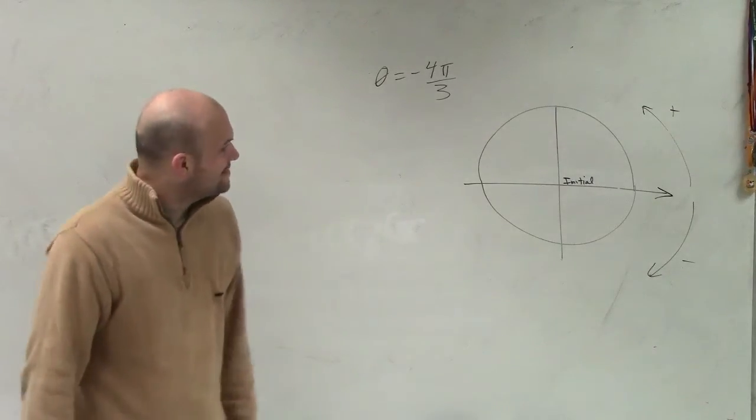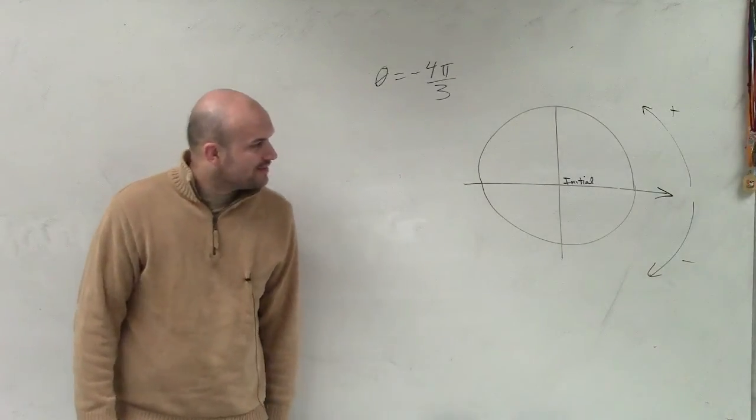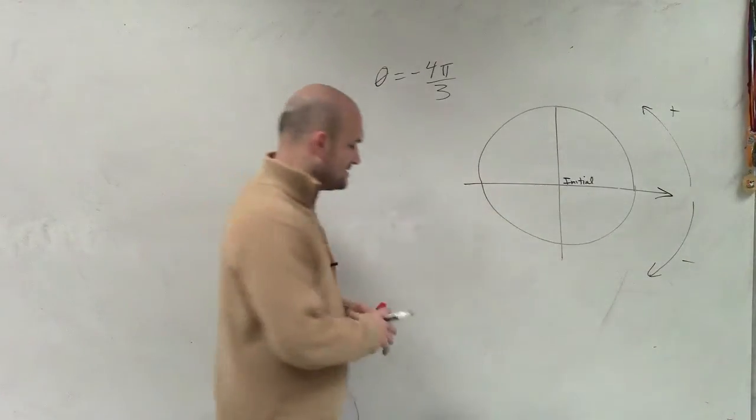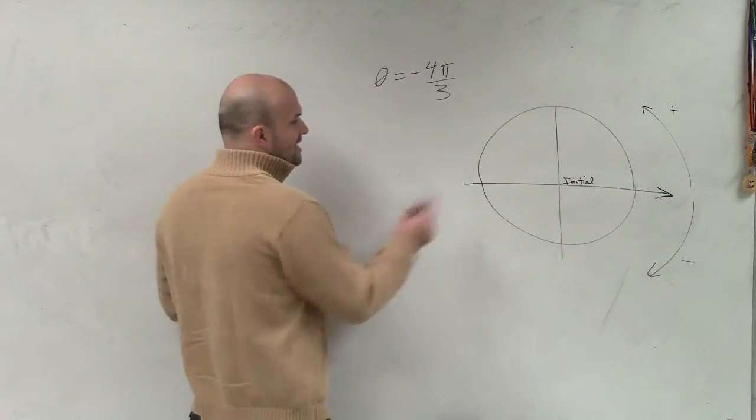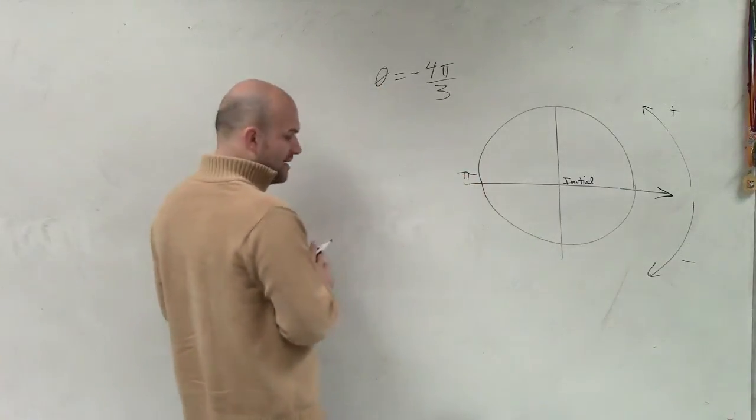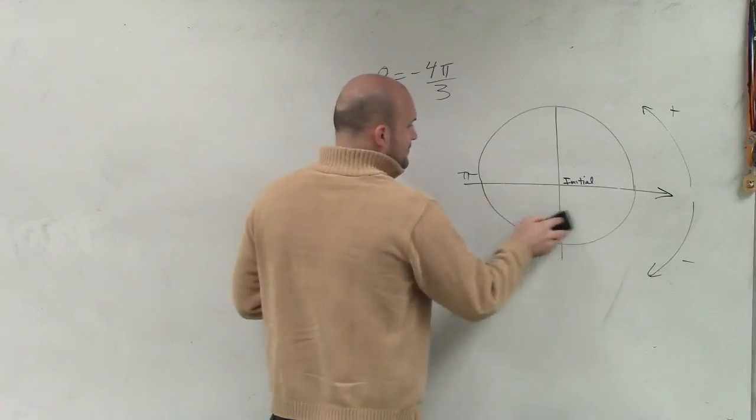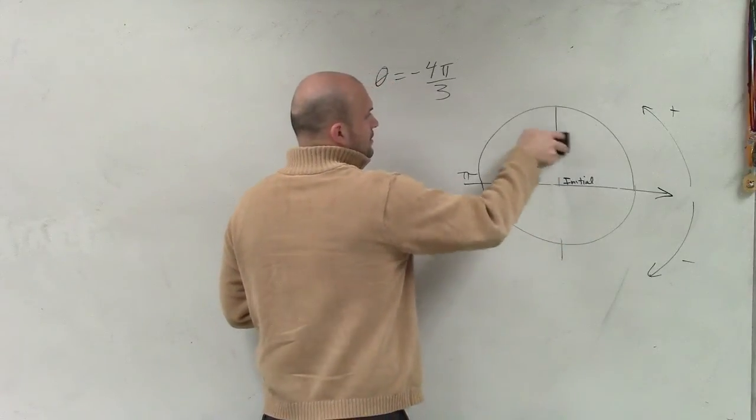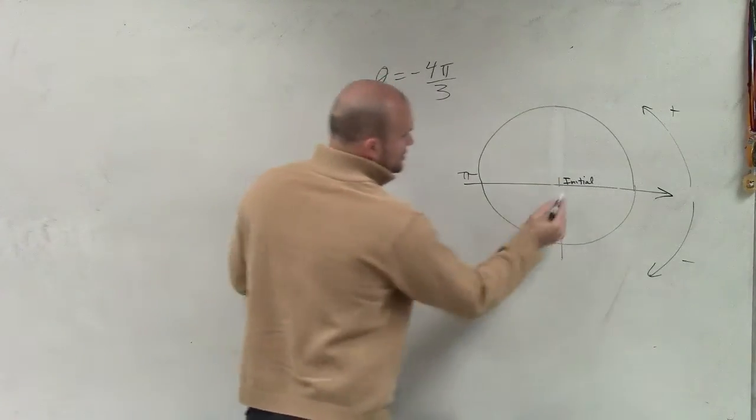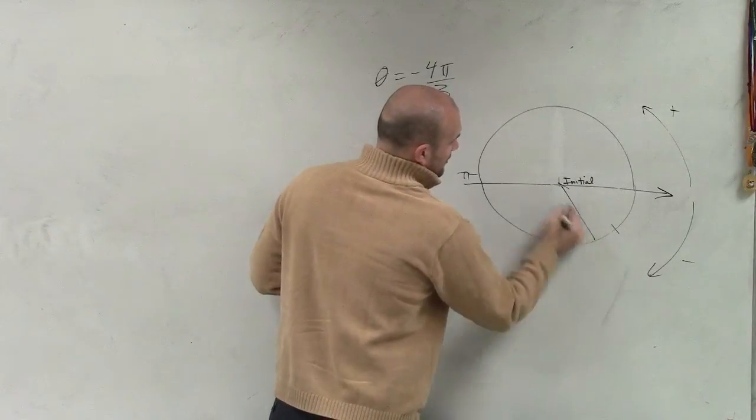Here is our initial side that we have. So when breaking up into thirds, what I like to do is leave the horizontal, because we know that's half of the circle, which is pi. But then what I can do is break up these halves and turn this into thirds.